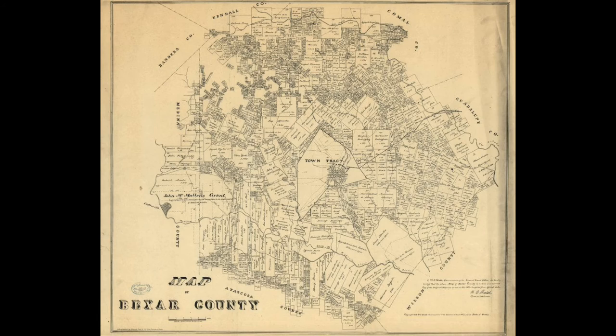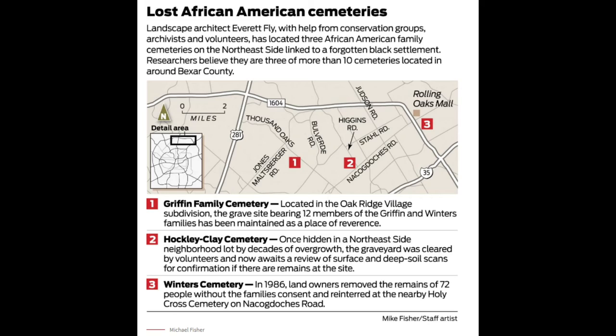What's really interesting about these families is that they had a little community on their piece of land that consisted of a school, a church, and a cemetery for African American people that lived around the area during that time. I'll be giving a video tour of these family and community cemeteries, as well as a bit of backstory behind these families and the story of how these cemeteries were rediscovered by Everett Fly, who is an architect, landscape architect, and historic preservationist, as well as the help of conservation groups, volunteers, and the descendants of these families.